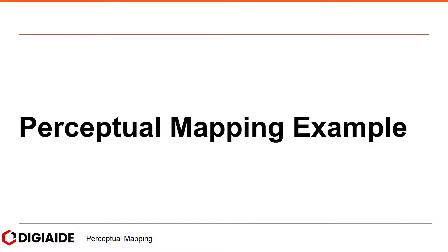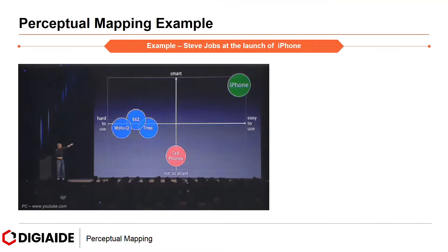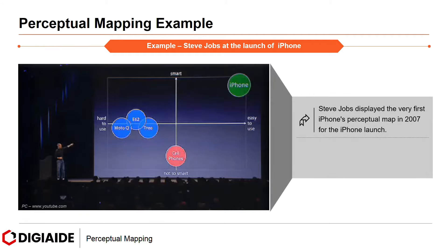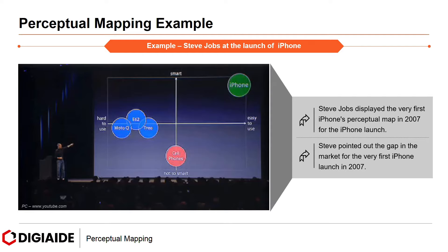Moving on to the final example of Perceptual Mapping — the legendary Steve Jobs at the launch of the iPhone. Steve Jobs displayed the very first iPhone's Perceptual Map in 2007 for the iPhone launch, pointing out the gap in the market. Looking at the picture, there are two parameters Steve Jobs focused on: the x-axis shows the ease of use of the product, and the y-axis shows how smart the current set of cell phones and smartphones were at that time. As you can see, the iPhone is in the top right corner, meaning it is smart as well as easy to use.